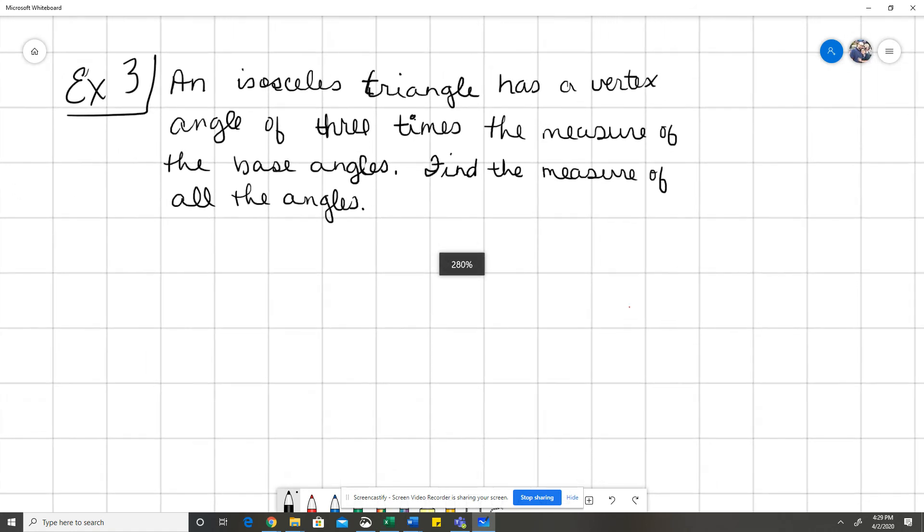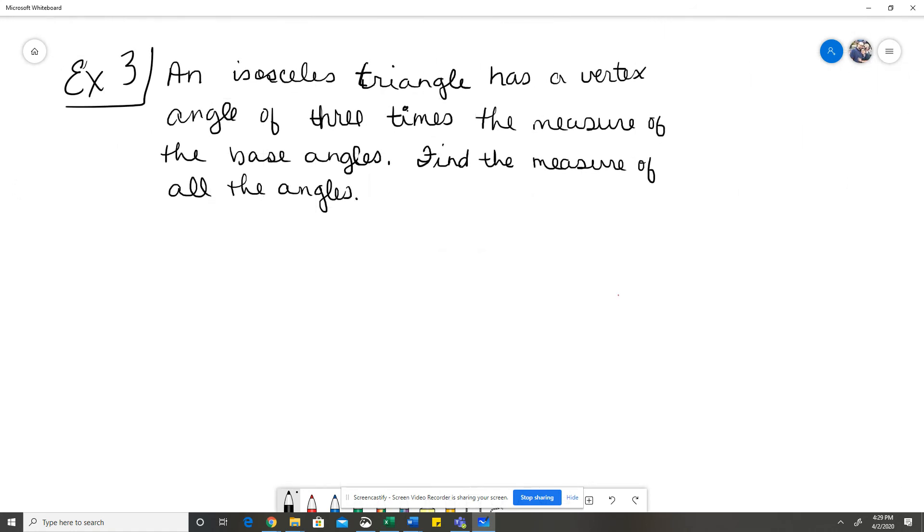Now, the next example is a word problem example. So we have to read some information first, and the information we have tells us that an isosceles triangle has a vertex angle of 3 times the measure of the base angles. We need to find the measure of all the angles. I like to draw them out if they're not already drawn for me. So I'm going to draw out just a rough sketch of a triangle.